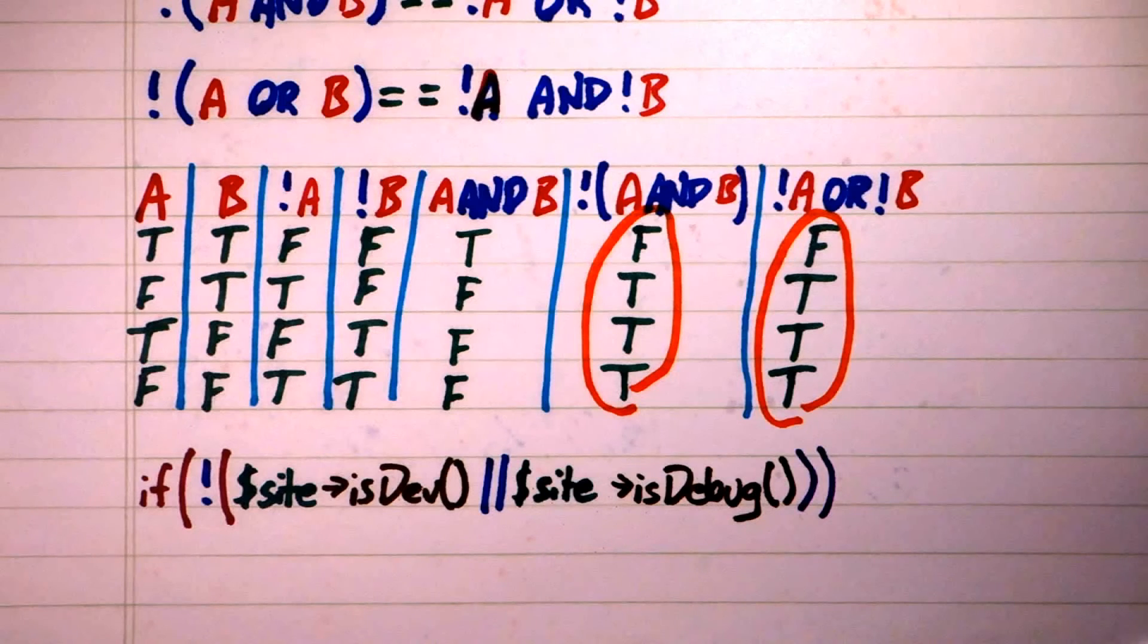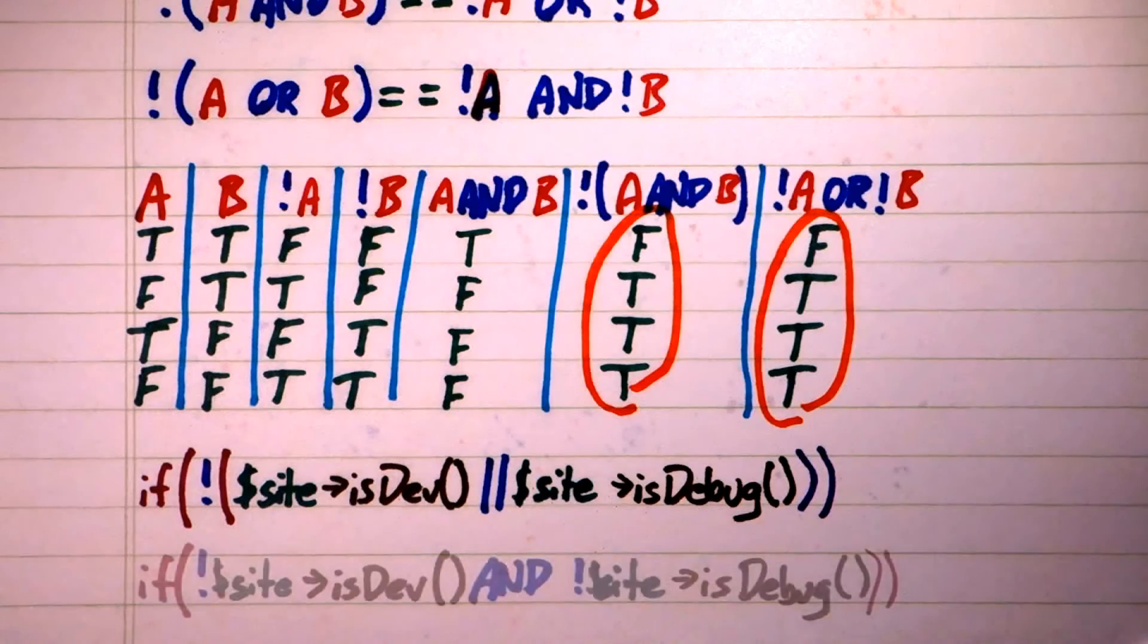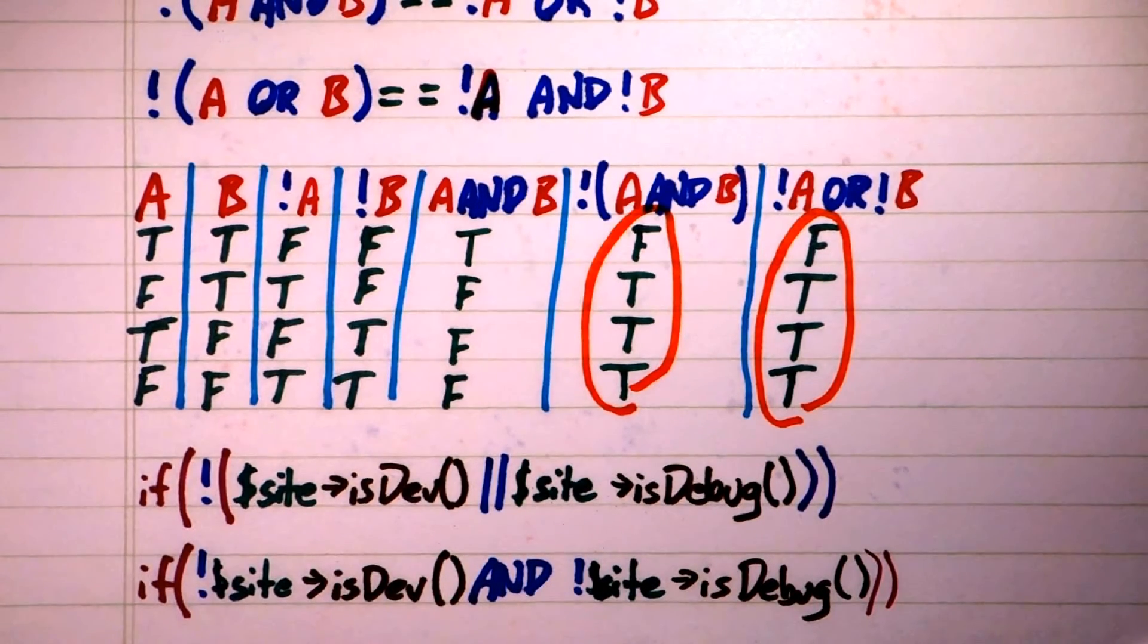Using DeMorgan's laws, we can rewrite this in a clearer way. Now, our code is not only clear, but we can also read it from left to right as if the site is not dev and it is not used in debug mode.